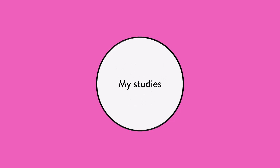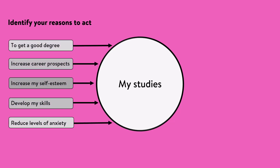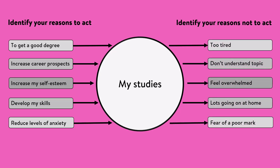Next, on the left hand side identify your reasons to act — how will you benefit by taking action? And on the right hand side of the circle identify your reasons not to act — what is preventing you from taking action? Try and be specific with your reasons. So if you've written something like 'too tired', can you specifically identify why you're too tired? Having specific reasons will help you with the next part of the activity.